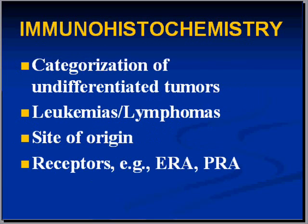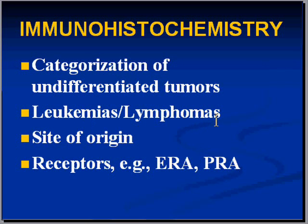Another technique that has expanded greatly is immunohistochemistry — also called immunoperoxidase in the older days. It is basically a way to stain antigens on tumor cells. If you have a very undifferentiated tumor and don't know whether it's a sarcoma or carcinoma, you might stain it with classical epithelial or stromal markers to find out where it came from — sometimes even identifying the specific organ of origin. Immunohistochemistry is also used extensively in the classification of leukemias and lymphomas, and the things stained are often called markers.